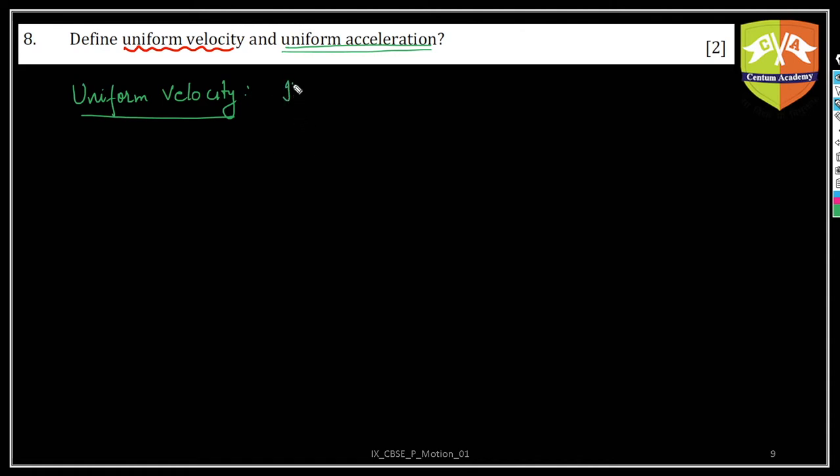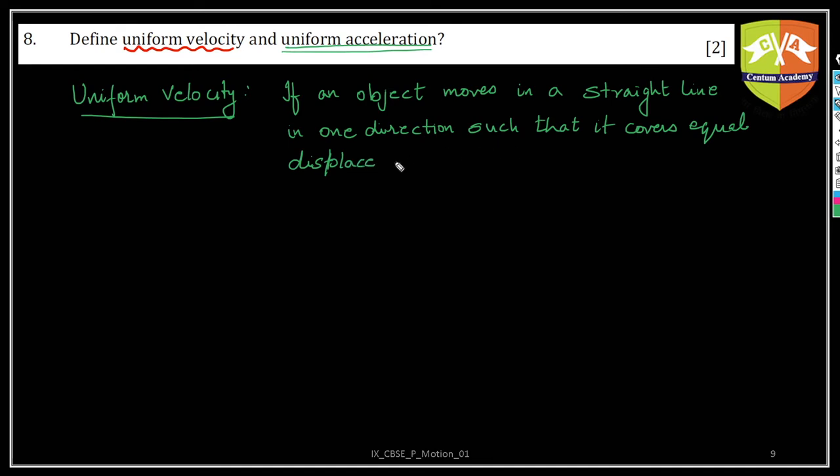Uniform velocity is if an object or particle moves in a straight line. So this is very, very important for uniform velocity. Moves in a straight line in one direction, such that it covers equal distance or in this case, you can also say displacement, but hardly matters because it's already a straight line in one direction.